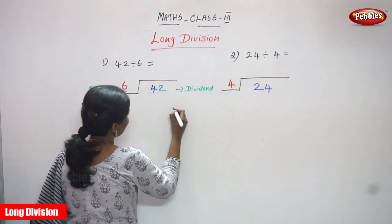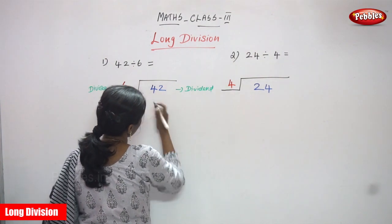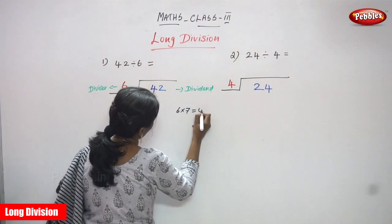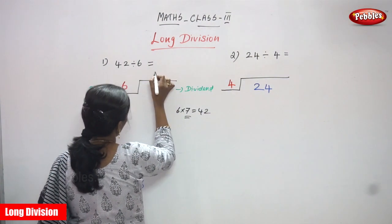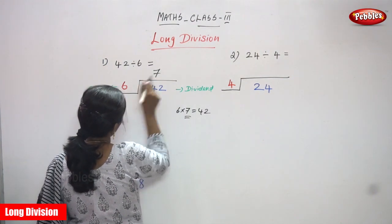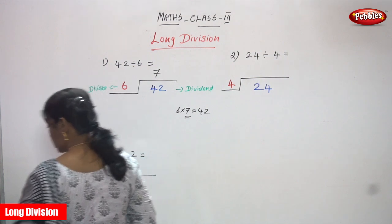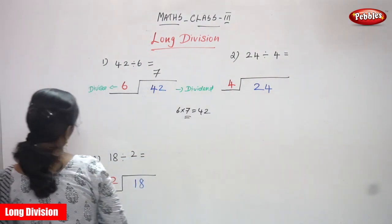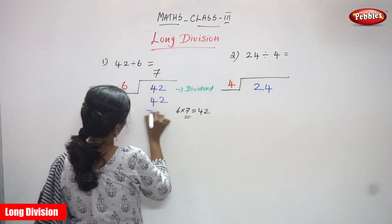So what is the number? 6 into 42 you can get 42. So what is the number? 7. So 7 is the quotient. 6 7s are 42. So you must write 42 here.